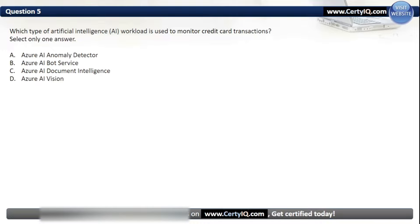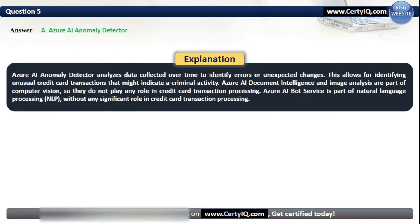Question 5. Which type of AI workload is used to monitor credit card transactions? The correct answer is Azure AI Anomaly Detector. It analyzes data collected over time to identify errors or unexpected changes, allowing for identifying unusual credit card transactions that might indicate criminal activity. Azure AI Document Intelligence and Image Analysis are part of computer vision, so they do not play any role in credit card transaction processing. Azure AI Bot Service is part of natural language processing without any significant role in credit card transaction processing.